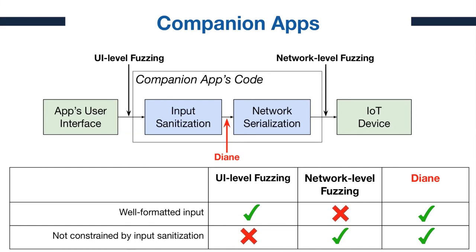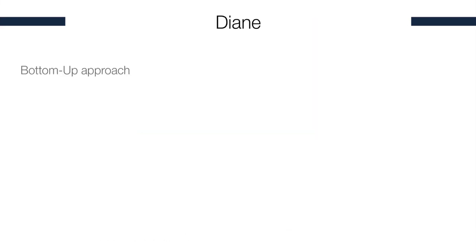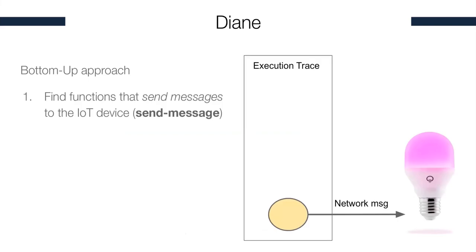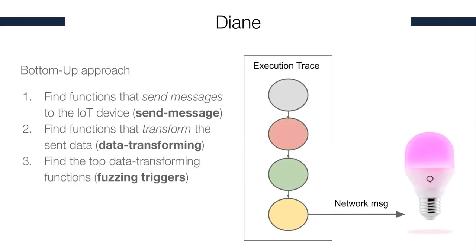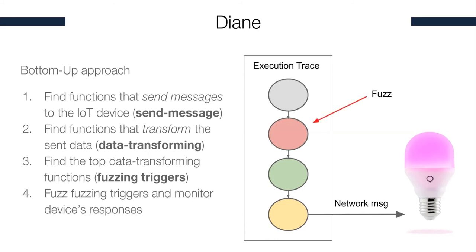Let's see how DIANE works. DIANE uses a bottom-up approach with four phases. In the first phase, we find the functions that send messages to IoT devices — we call these send message methods. Then we find the functions that transform the data accepted by these send message functions — we call these data transforming methods. The dominators of these data transforming methods are called fuzzing triggers, which will be fuzzed, enabling us to generate properly formatted data with unconstrained input.